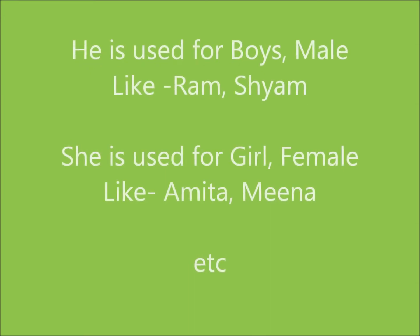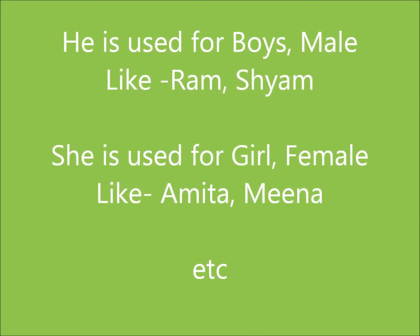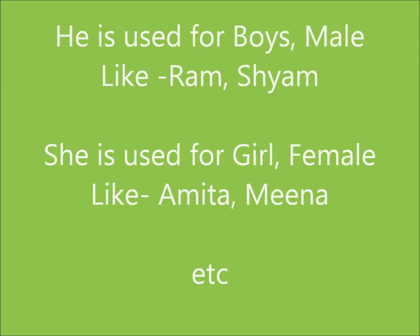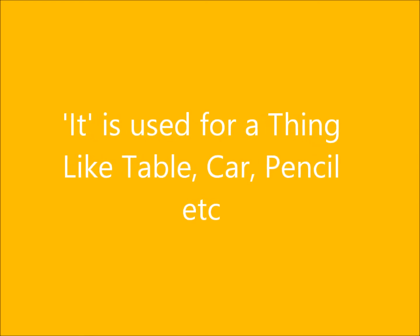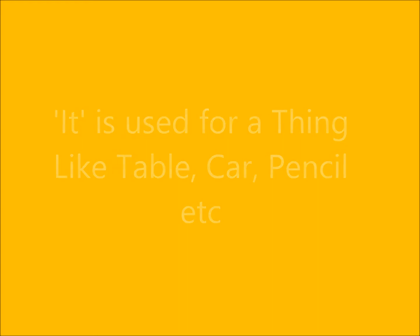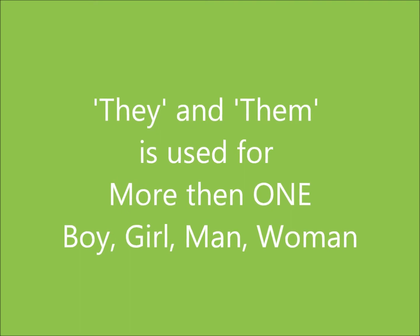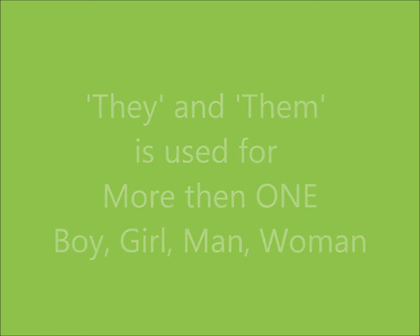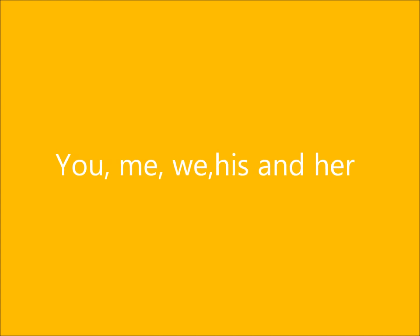He is used in place of a boy or a male, like Ram, Shyam. And she is used in place of a girl, like Amita, Neena, etc. It is used for a thing, like table, car, pencil, etc. They and them is used for more than one boy, girls, men, women. Likewise, you, we, me, his and her are used.